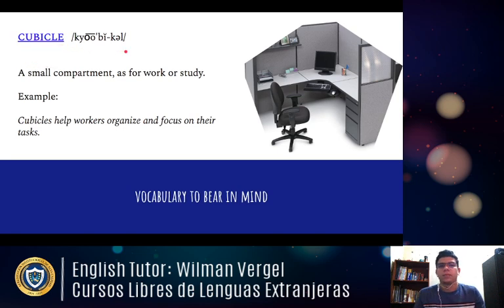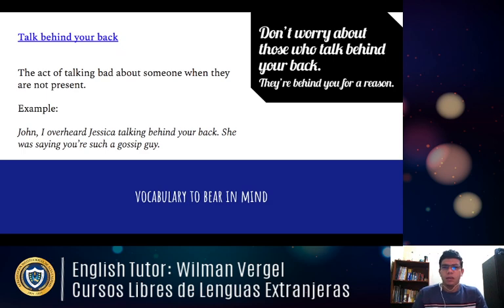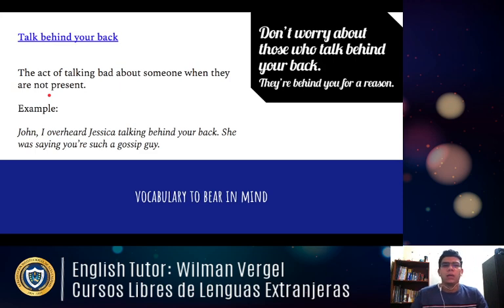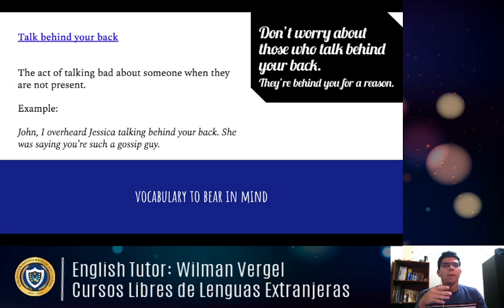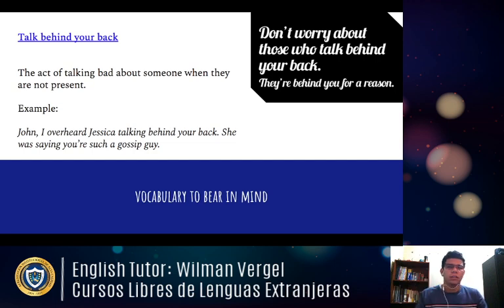The next expression is 'talk behind your back.' The definition is: to talk badly about someone when they're not present. For example: 'John, I overheard Jessica talking behind your back — she was saying you're such a gossip.' 'Overheard' is when you coincidentally hear people talking about something as you pass by. 'Talk behind your back' means talking bad about someone when they're not present.